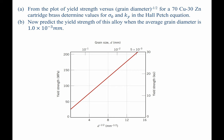we are asked to determine sigma-naught and k-sub-y, the coefficients in the Hall-Petsch equation, and for part B, we are then asked to use those coefficients to predict the yield strength of this alloy when an average grain diameter of 1 times 10 to the negative 3 millimeters is available.